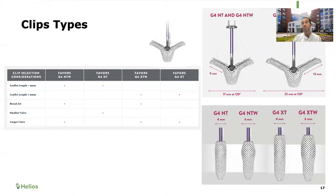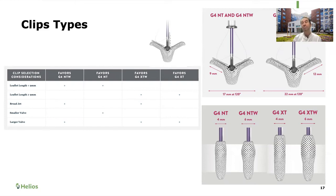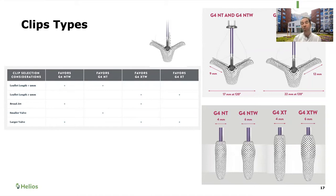We have a few clip choices. The newest generation is the G4, which allows for independent grasping — each arm can be closed independently, unlike the previous generation where both arms had to close simultaneously. We have a smaller clip, the NT, and a bigger clip, the XT. Both come in a standard type and a W (wide) type, meaning the clip is thicker. For a smaller valve and multiple clips, we usually go with the NT; for a bigger valve and a single clip, we go with the XT.